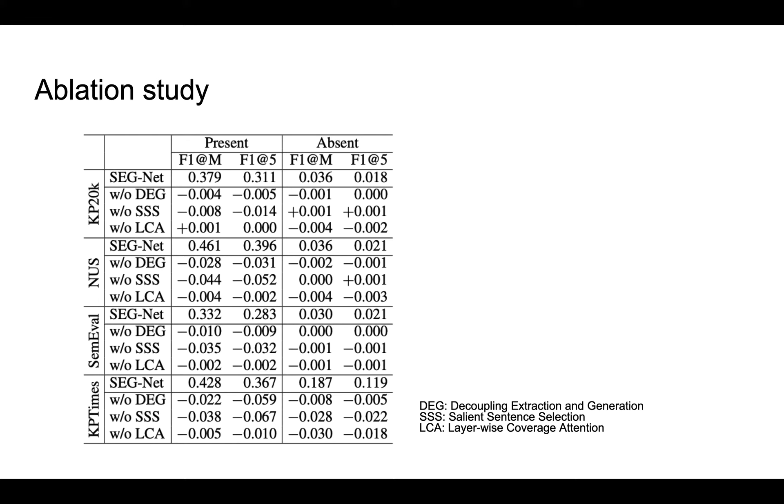The contribution of sentence selector in present keyphrase extraction is evident from the table. The impact using salient sentences to generate absent keyphrases is also significant for the web domain dataset KPTimes, because such documents are usually very long. The impact of using layer-wise coverage attention is again very significant on KPTimes. As by design, it is helpful for summarizing concepts expressed in different segments of a long document.